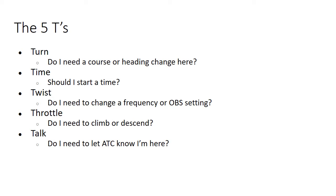The five T's are a way to make sure you're not forgetting something when you're flying IFR. It's actually pretty straightforward. Every time you cross a nav aid, a fix, an intersection, or hit an assigned altitude, you go through these five steps to see if there's anything that needs to be done.